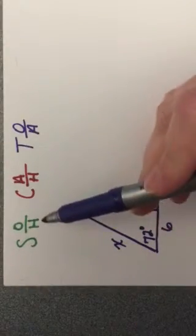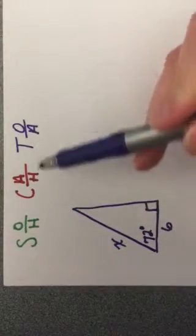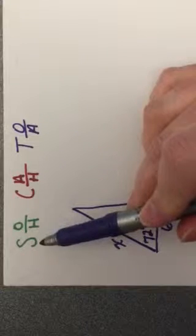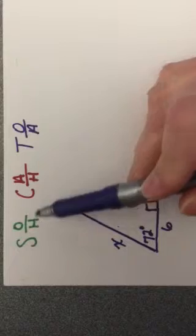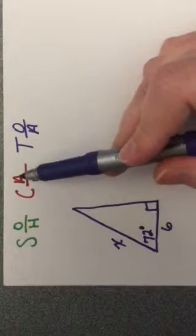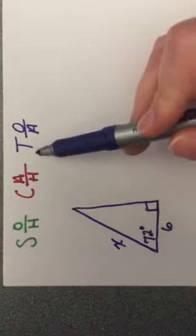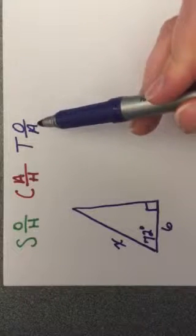I've written across the top here SOH-CAH-TOA. Hopefully you remember from the last video. This represents sine, which is opposite over hypotenuse, cosine, adjacent over hypotenuse, tangent, which is opposite over adjacent.